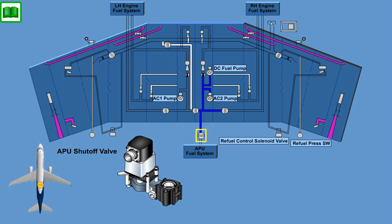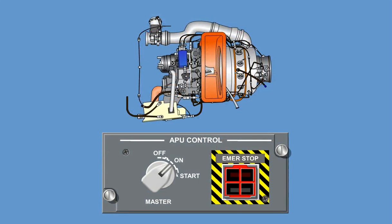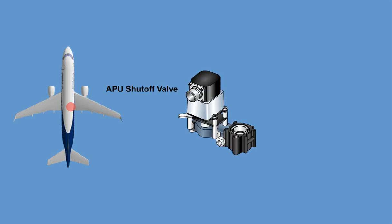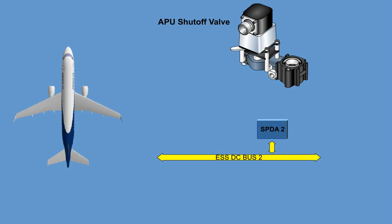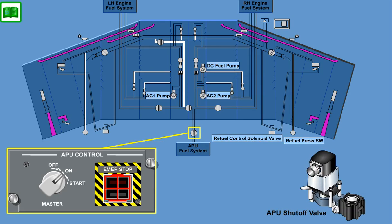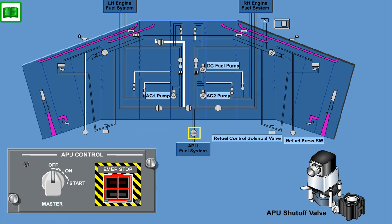The APU is fed from the right-hand engine feed line when pressure in that line is available. An APU feed shut-off valve is mounted aft of the fuel tank on the APU feed line to isolate the APU from the fuel system after APU shutdown or when commanded from the cockpit. The DC motor-operated valve is mounted outside of the fuel tank on the rear spar of the wing stub. It incorporates a manual override and a position-indicating lever. 28-volt DC power is supplied to the valve via the solid-state power controllers in SPDA 2 from Essential DC Bus 2. The shut-off valve is controlled by the overhead APU control panel in the cockpit, commanded closed when the APU master switch is selected to off and commanded to open when selected to the on position.